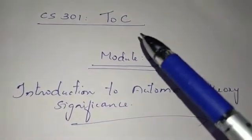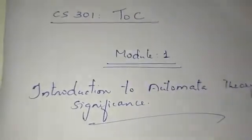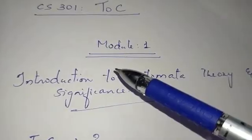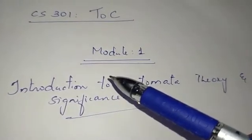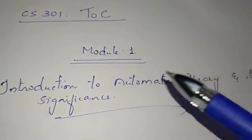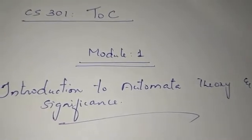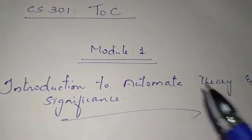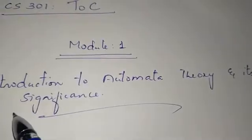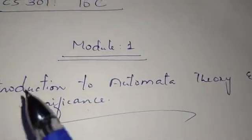The first subject is Theory of Computation, TOC, subject code CS301. This is a very important subject for all competitive exams. I will show you some questions in this area. If you are interested in this subject, you will learn deep knowledge. So first, the module is the introduction to automata theory and its significance.